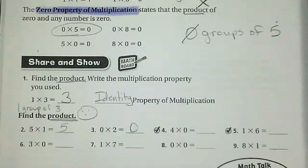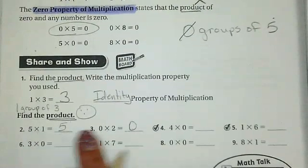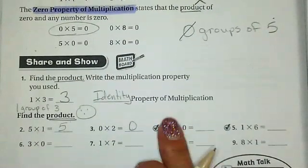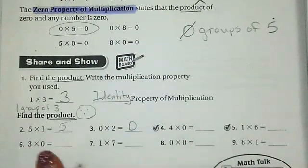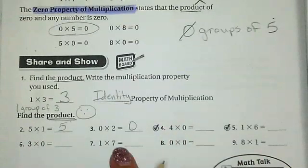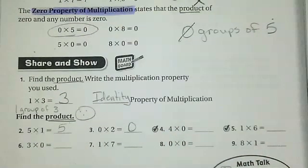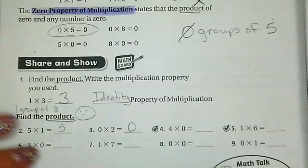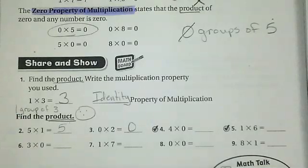Go ahead and finish off numbers four, five, six, seven, eight, and nine. Push pause, finish those, and then push play again.